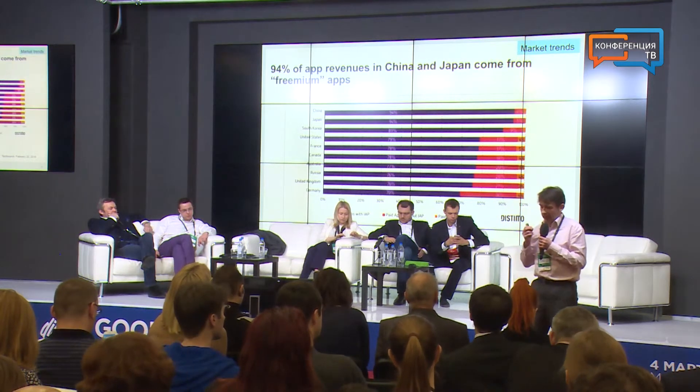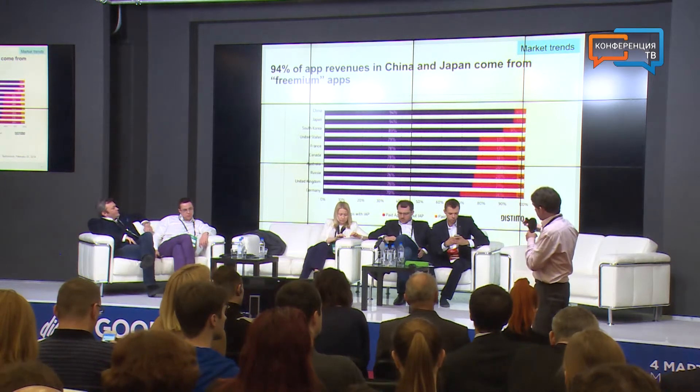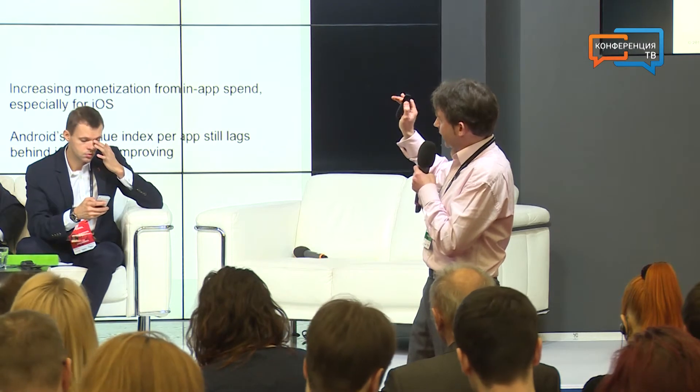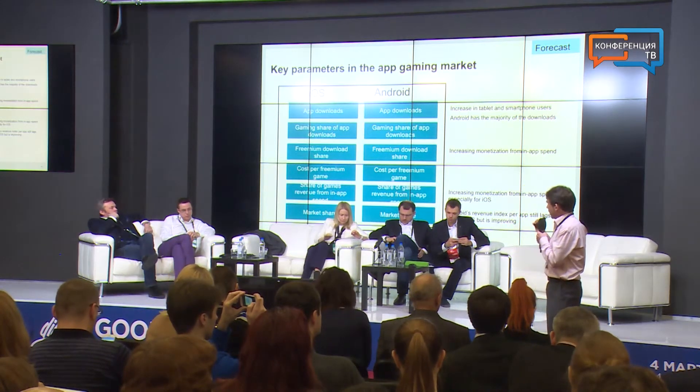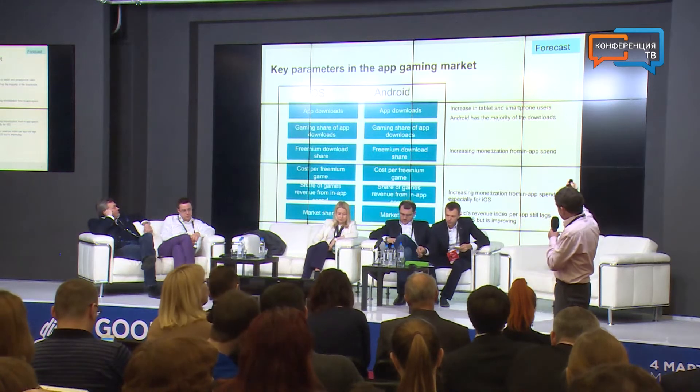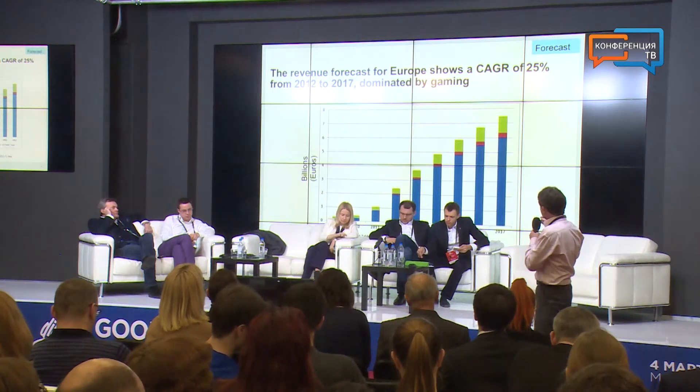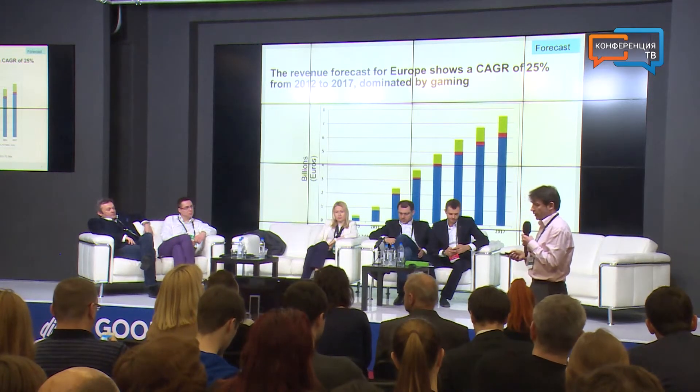In terms of freemium apps, freemium is dominating — as you can see by country, freemium apps are what dominates, and the amount people pay per app is also changing. You need to understand the demographics of each country. Going through the key forecast parameters: operating system share, freemium share, the share of in-app spend, and how to monetize that going forward. Digital revenues are growing at 25 percent — compare that to online e-commerce in Europe, which is growing at 10 to 12 percent. So digital goods are growing at twice the rate of the overall online market.